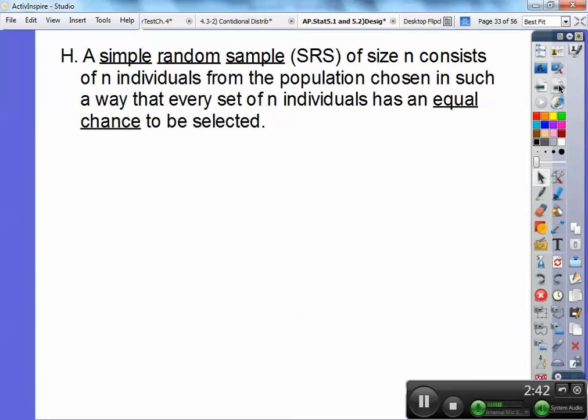Section H. A simple random sample, we're going to use SRS for the rest of this year. Size N consists of N individuals from the population chosen in such a way that every set of N individuals has an equal chance to be selected. So, if I was going to select five people at our school to represent our school, each group of five would have to be equally likely to be selected. Or say I'm doing a GPA analysis of our school. Well, it wouldn't be a fair pick if I picked my AP students. It would have to be a fair pick amongst everybody, freshmen through seniors in high school.